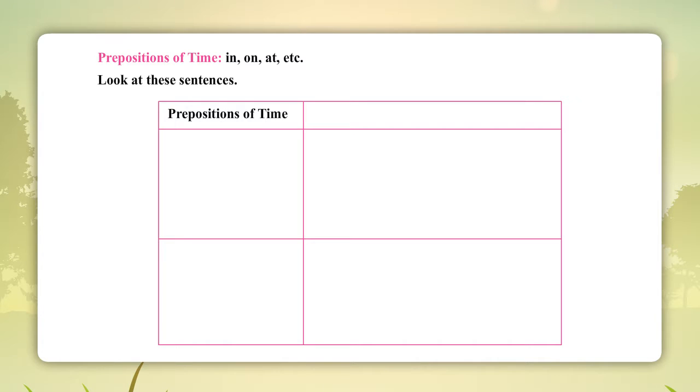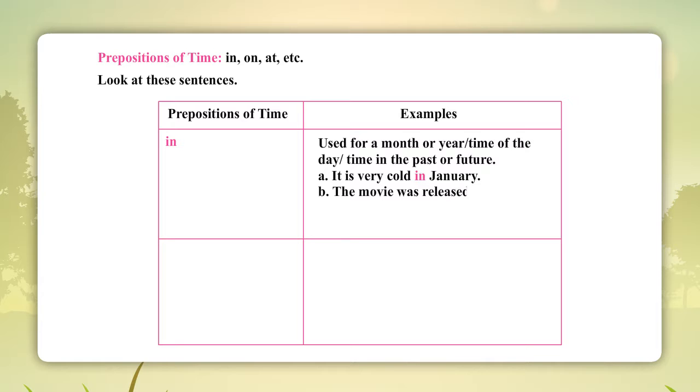Prepositions of time. In: Used for a month or year, time of the day, time in the past or future. A. It is very cold in January. B. The movie was released in 1999. C. I will meet her in the evening. D. It is generally hot in summers.